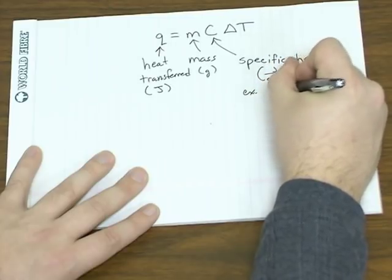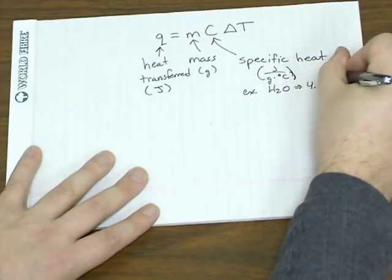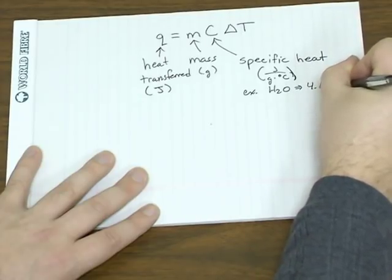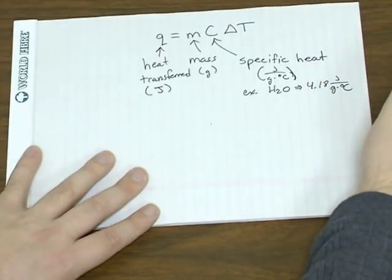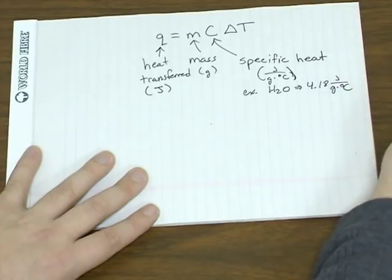So for example, water has a specific heat of 4.18 joules per gram degree. That means it takes that many joules to raise one gram of water one degree.